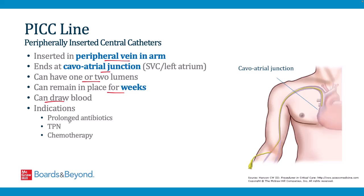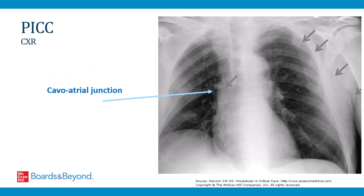Key indications for PICC lines include prolonged antibiotics, TPN (total parenteral nutrition), and administration of chemotherapy. PICCs are also placed in patients requiring frequent blood draws or multiple IV medications. Any time a PICC line is placed, the catheter tip location must be confirmed before use — typically with a chest x-ray. PICC lines are predominantly placed by specialized IV nurses and interventional radiology.